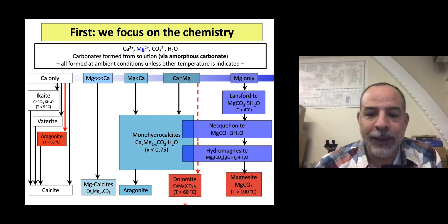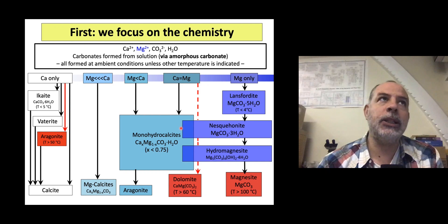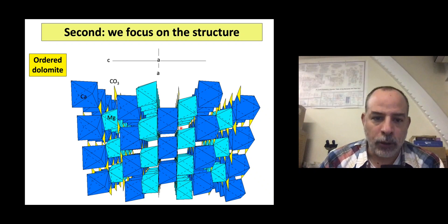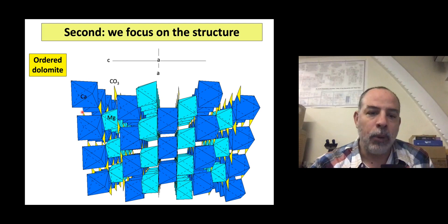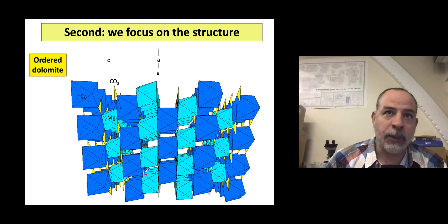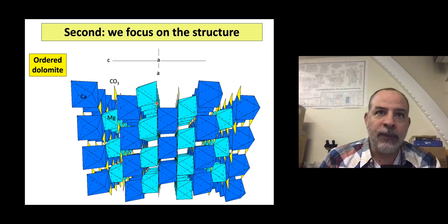The second variable is structure. There are different types of dolomites: some contain slightly more calcium than magnesium, sometimes equal amounts. One very important aspect is the degree of ordering. Ordered dolomite consists of octahedral polyhedra containing calcium and magnesium bonded by carbonate groups, with alternating bands of only calcium, only magnesium. Dolomite can also be disordered — with random mixing of calcium and magnesium sites — and that translates into different properties, different stability product, and different dissolution rate.